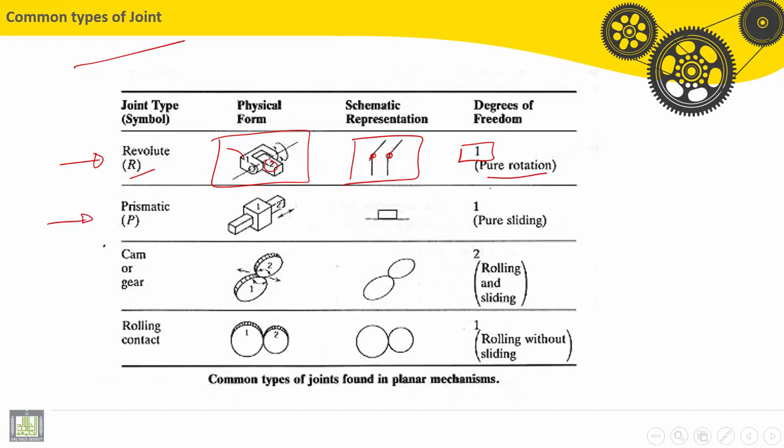Second one, prismatic. The symbol is P. So part number two here makes a translation, a pure sliding, about the part or the link number one. So the schematic representation, very simple, rectangle with a line.